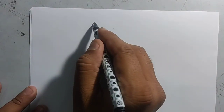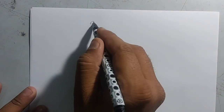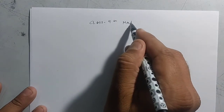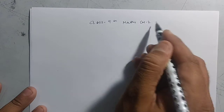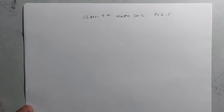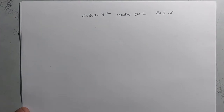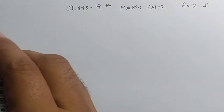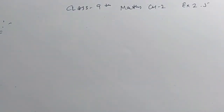Class 9th Maths, Chapter 2, Exercise 2.5. First question: Use suitable identity to find the following product.